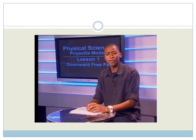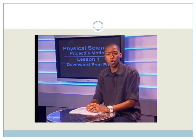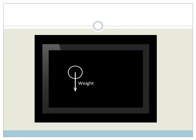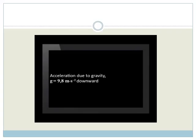Why is the direction of the acceleration due to gravity downward? Acceleration is always caused by an unbalanced force, so the direction of acceleration is always the same as the direction of the unbalanced force. In freefall, the projectile's weight is the unbalanced force which causes acceleration due to gravity, and the direction of weight is always downward. That is why the direction of acceleration due to gravity G is always downward.